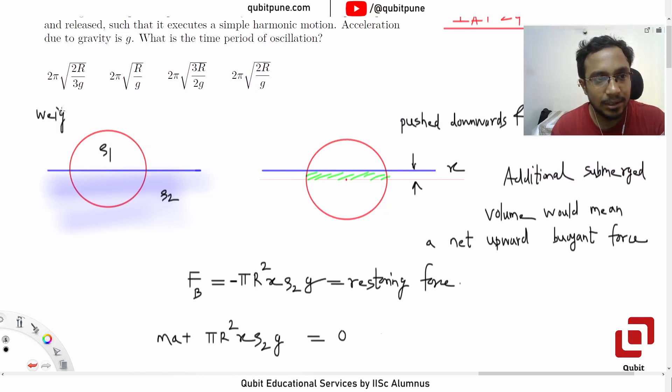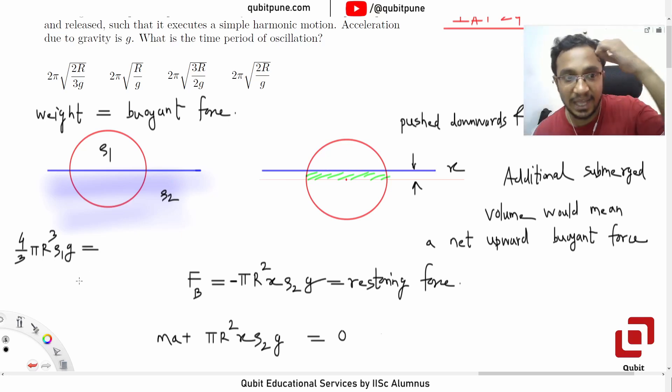So we need to draw a separate free body diagram for that. We can write: weight equals buoyant force. What is weight? (4/3)πr³ρ₁g equals the buoyant force. The buoyant force is half the volume, so half of (4/3)πr³ρ₂g.